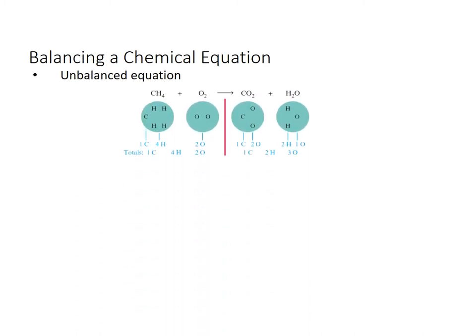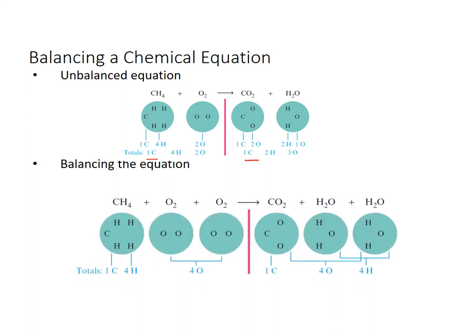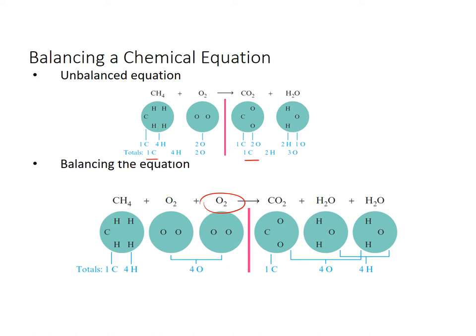So here is an example of an unbalanced equation. That was the methane plus the oxygen producing the carbon dioxide and water. All right, so if I look at these from a molecular point of view, I have one carbon on the left and one on the right. I have four hydrogens on the left, but only two hydrogens on the right. Two oxygens and three oxygens. So what am I going to do to balance this? Well, what we need to do is we need to add a molecule of water on the right. Then I have one carbon, one carbon, four hydrogens, four hydrogens, four oxygens, four oxygens.